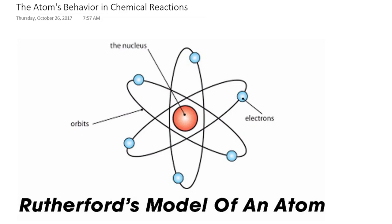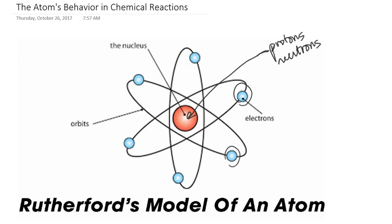From Rutherford's model, we learned that in the nucleus there are two or three subatomic particles — the protons and the neutrons. But outside of the nucleus we have the third subatomic particle, which would be the electrons.